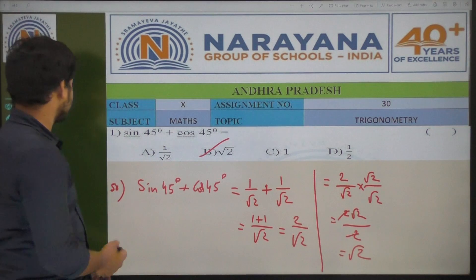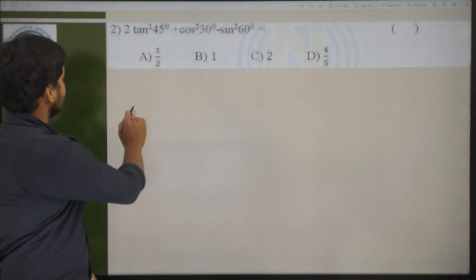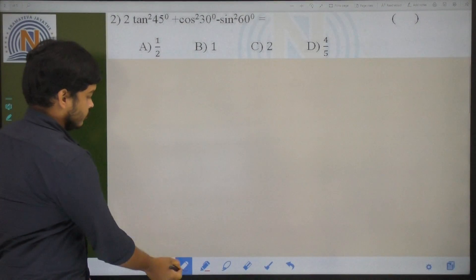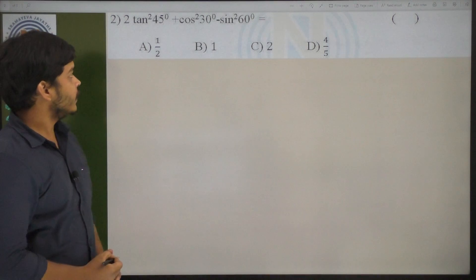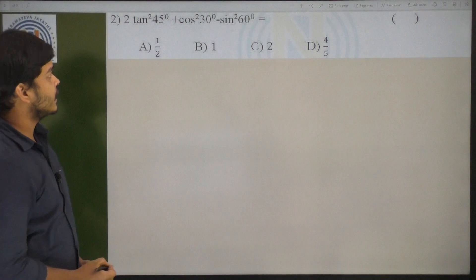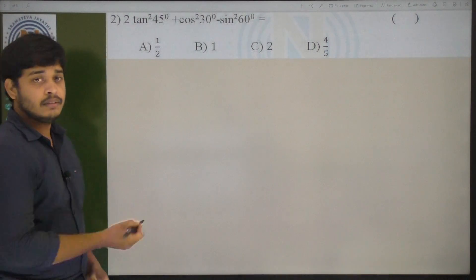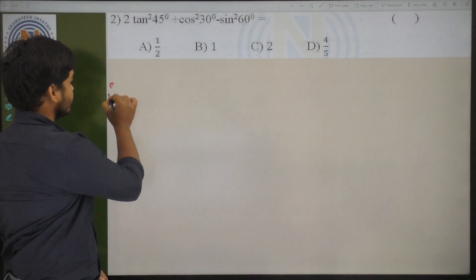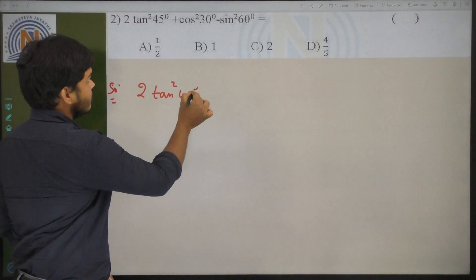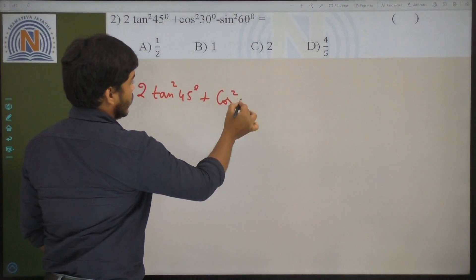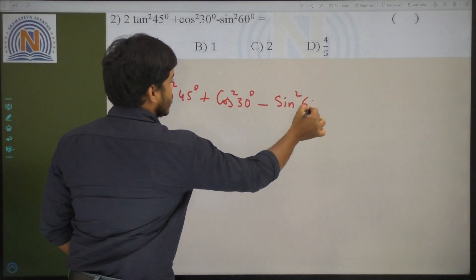Coming to the next problem: 2 tan 45 degrees plus cos 30 degrees minus sin 60 degrees. The value is — so see children, it is given that 2 tan 45 degrees plus cos 40 degrees minus sin 60 degrees.